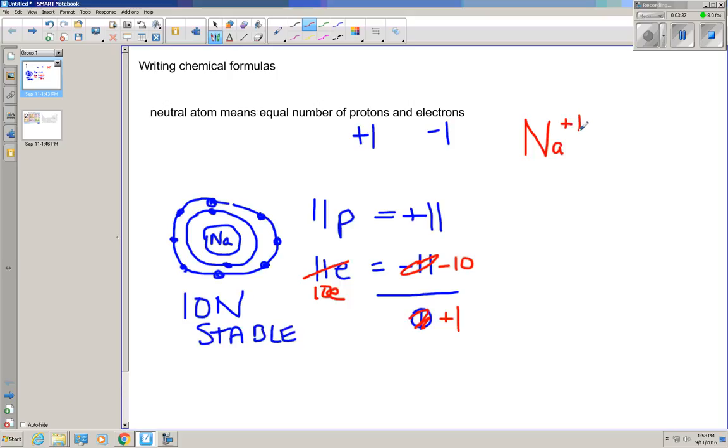Now, you may see this written slightly differently. Some books, some sheets, if something is just a plus one charge, they're just going to say Na plus. Other places will write Na plus one. I kind of like this a little bit better. Just be aware, some of your ion charts that I've given you have written out like this. Just know that they exist.